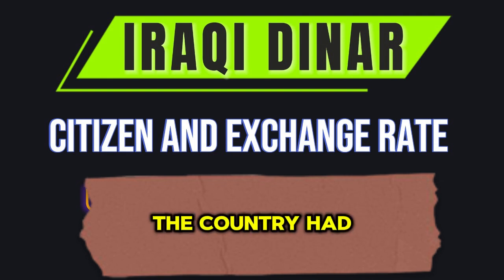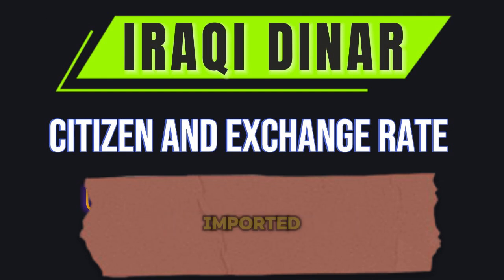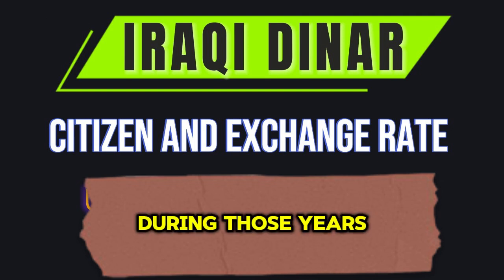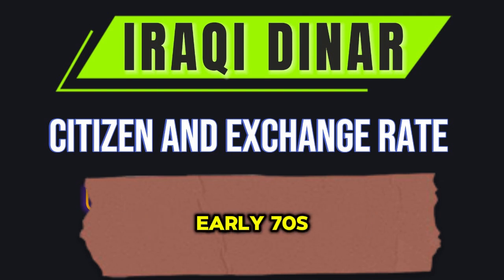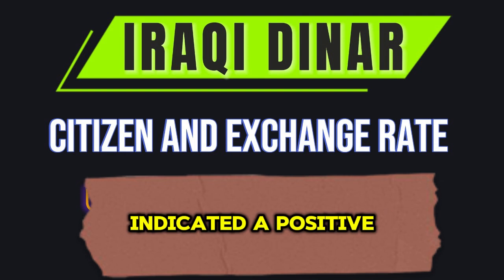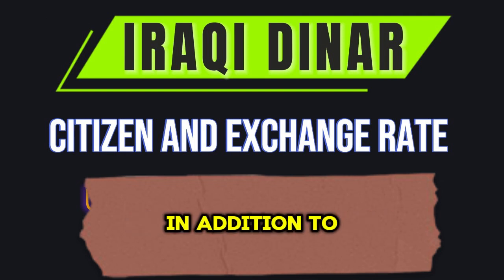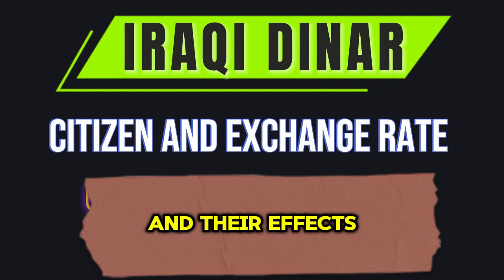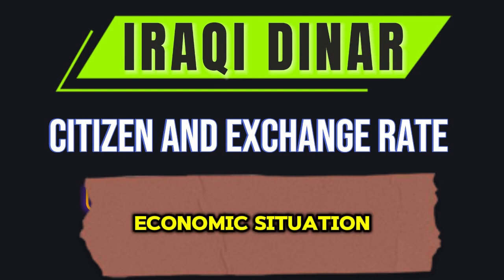In the past, the country had the capacity to export goods and services more than it imported, which strengthened the value of the national currency — especially the external value of the currency itself — during those years, especially in the early 70s. The economy indicated a positive state, in addition to the availability of foreign reserves that support the main buffer against potential external factors and their effects on the overall economic situation.